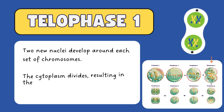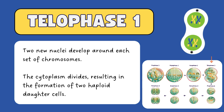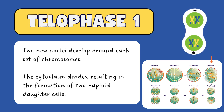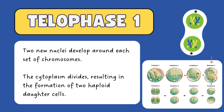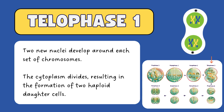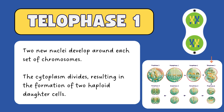During telophase I, two new nuclei develop around each set of chromosomes. Following this, the cytoplasm divides, resulting in the formation of two haploid daughter cells. This marks the end of meiosis I.